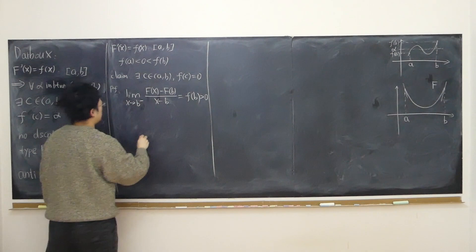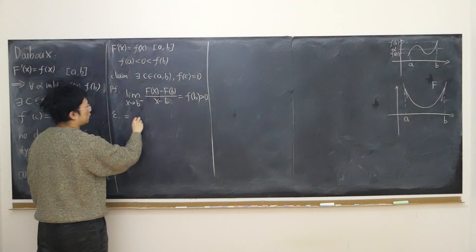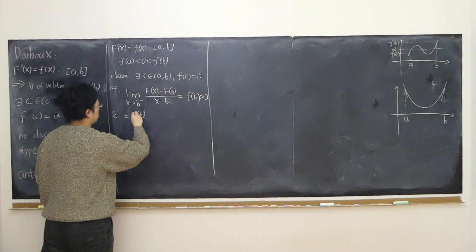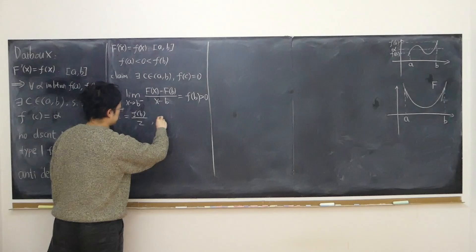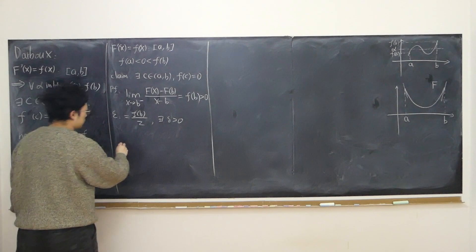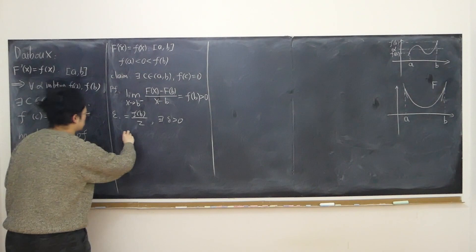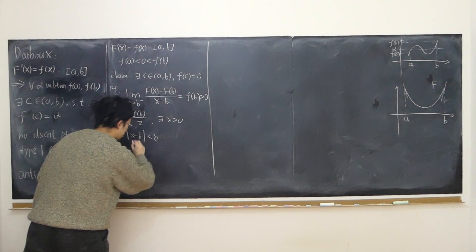To put it formally, I'm going to use a special epsilon equal to half of f(b). Since f(b) is positive, this is valid. There must exist some delta such that when x is within the deleted neighborhood of b — meaning b minus x is larger than zero and less than delta — we can always have the following inequality.